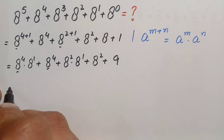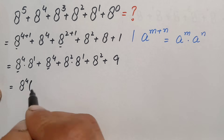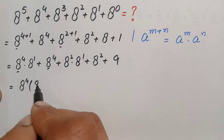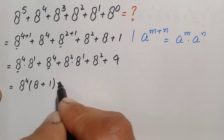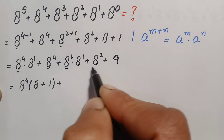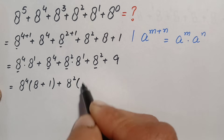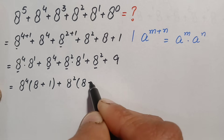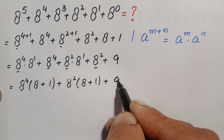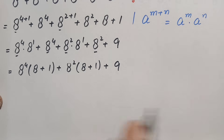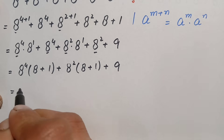Now looking at the first two terms, a raised to power 4 is common. So we take out a raised to power 4 as common from the first two terms. Inside the parenthesis, a raised to power 1, which is simply a, is left plus 1. Then we take a squared as common from the third and fourth terms, leaving a plus 1, and the last term remains 9. So a plus 1 equals 9 in both bracketed expressions.